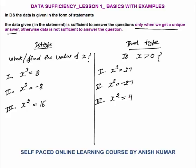There are two types of questions in DS. The first type is 'What is the value of x?' or 'Find the value of x' — the question starts with 'what' or 'find.' For example, if x³ = 8, then x = 2 because only 2³ = 8. The question was 'what is the value of x?' — we got a unique value of 2, so Statement 1 is sufficient to answer the question.